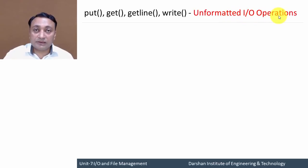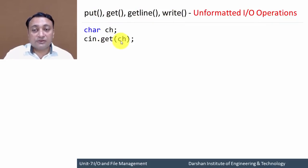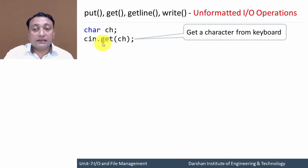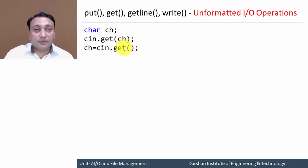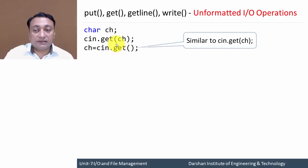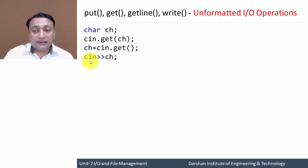Unformatted input-output operations can be performed using put, get, getline, and write functions. The get function is used to get a character from the keyboard and is accessed using the cin object. cin is an object of the iStream class, and get is a member function of iStream. By writing cin.get, we can get a character from the user, or we can write cin.get and assign the input to a variable. We can also use cin with the extraction operator and a variable name. All three statements are valid to get a character from the user.